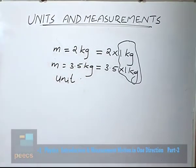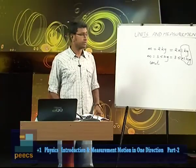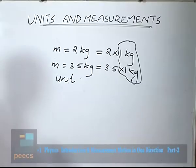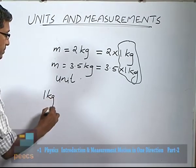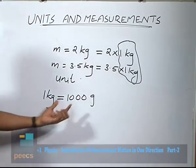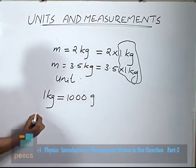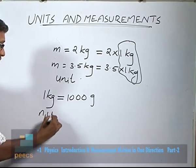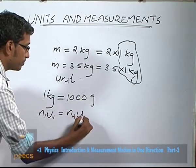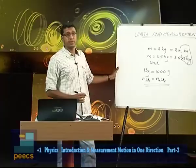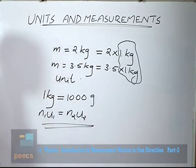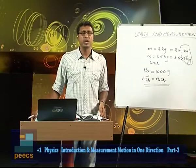Kilogram is a unit of mass. There are different systems of unit — for example, kilogram is one unit, gram is another. 1 kilogram can be written as 1000 gram. So kilogram is one unit, gram is another, and here 1 is the numerical value. Writing N₁U₁ = N₂U₂: any physical quantity can be represented using a numerical value and a unit.